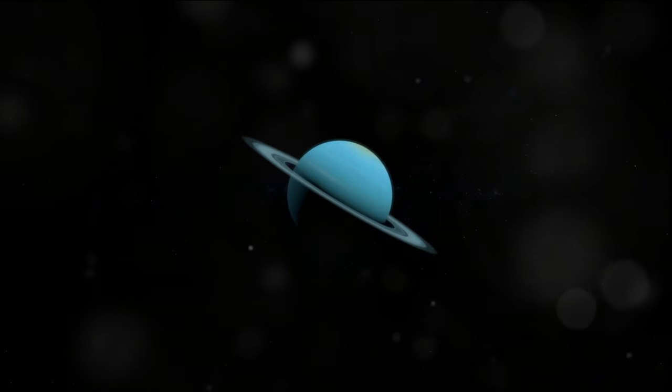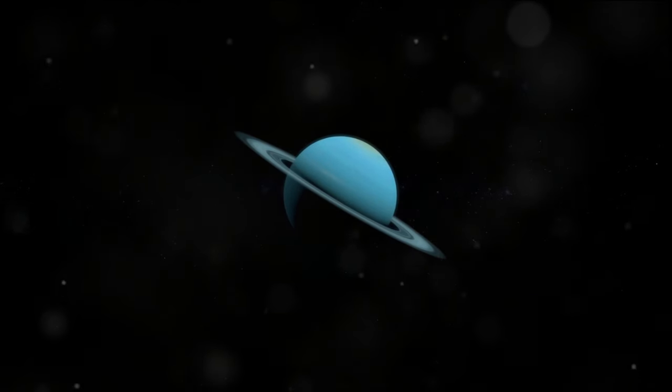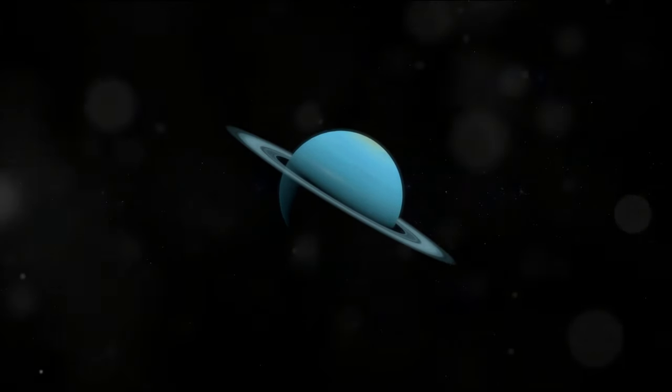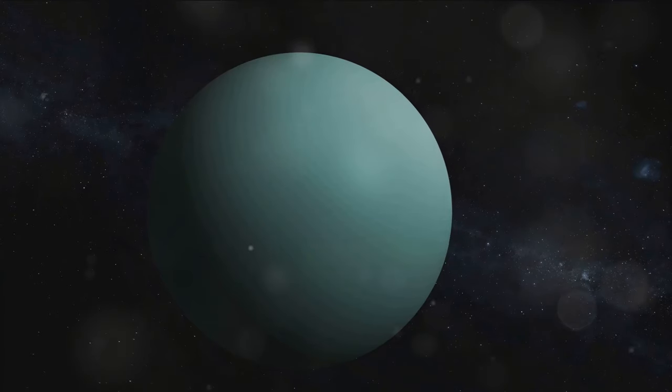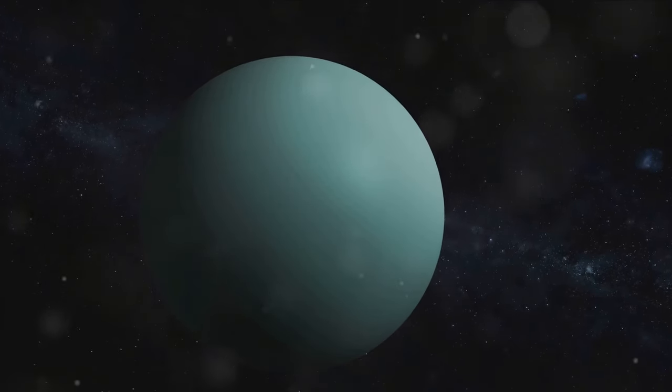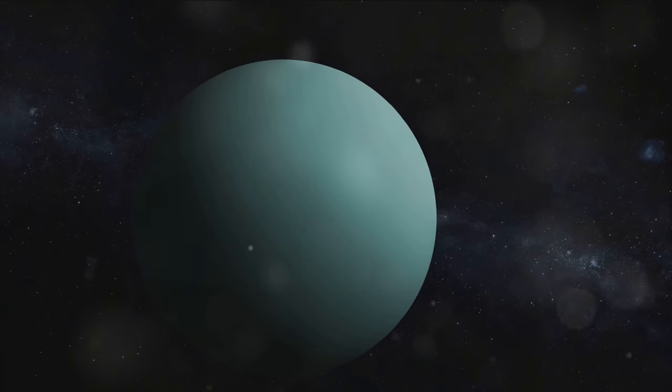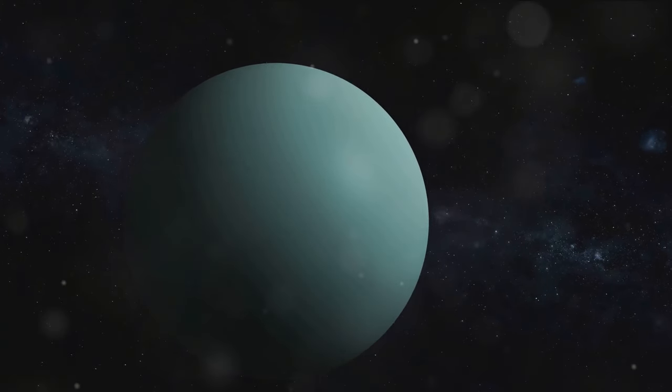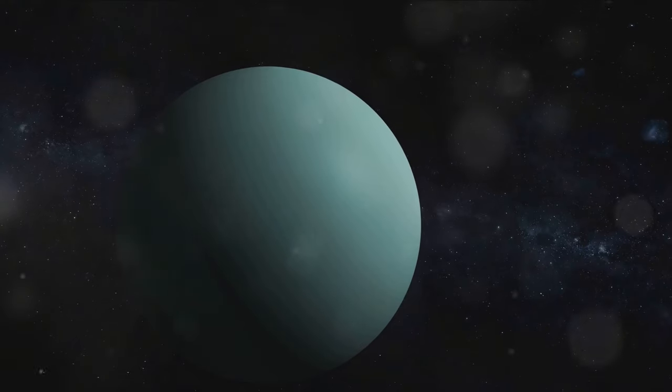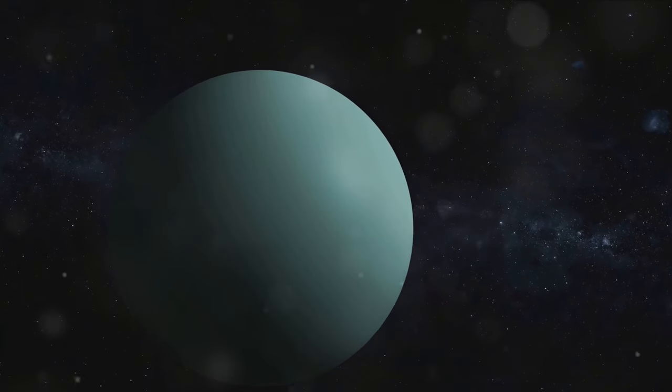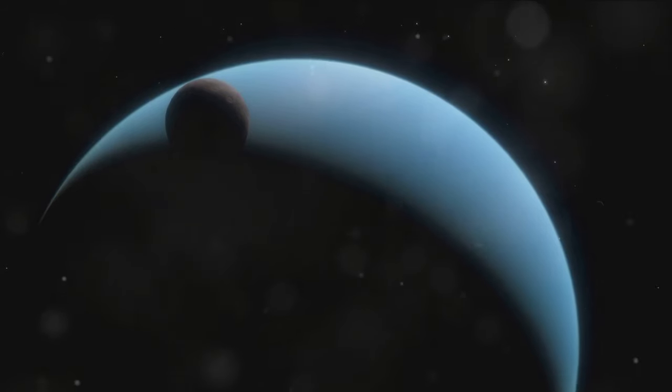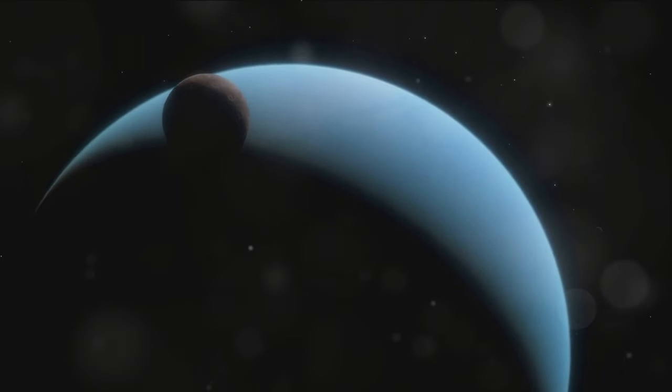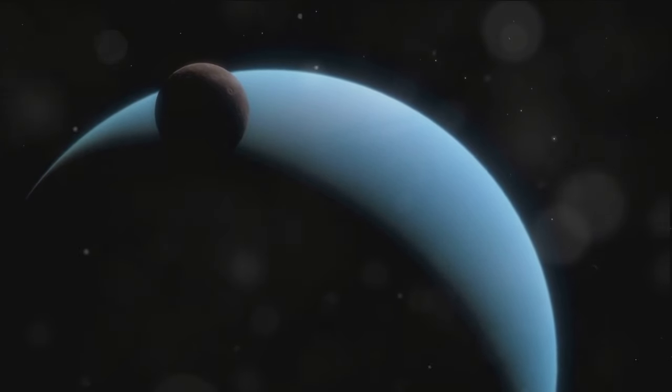Our focus is on one celestial body in particular, an enigmatic giant that has been a source of intrigue for astronomers and space enthusiasts alike. Today we will take a closer look at this mysterious emerald giant named Uranus, a jewel of our solar system that dazzles us with its unique characteristics. Named after the Greek god of the sky, Uranus carries a mythological significance that resonates with its otherworldly charm.